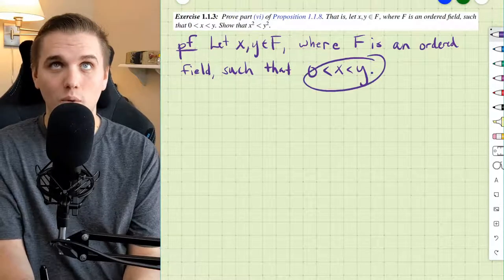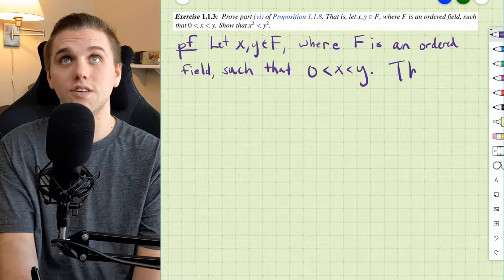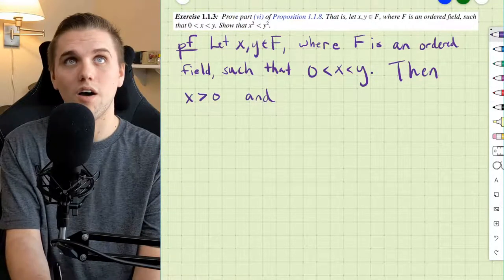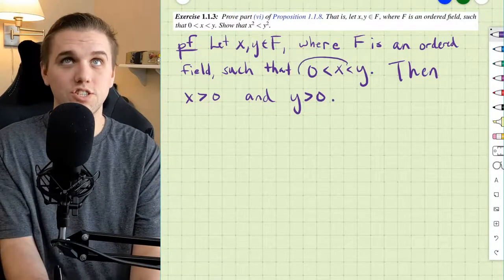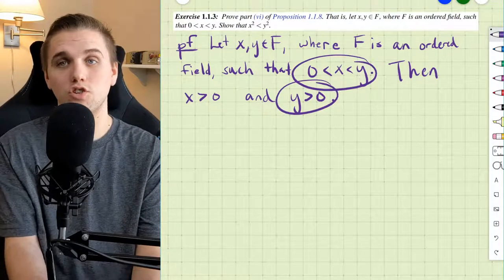Now, let's unpack what's being said here because a lot is being said here. First, this means that both x and y are both greater than 0. x is greater than 0 right here, and y is greater than 0 because of the transitive property.